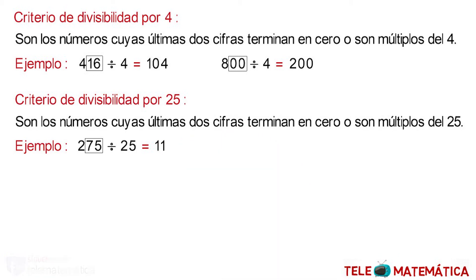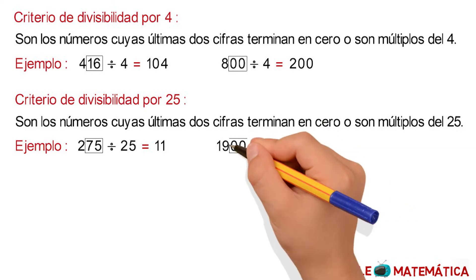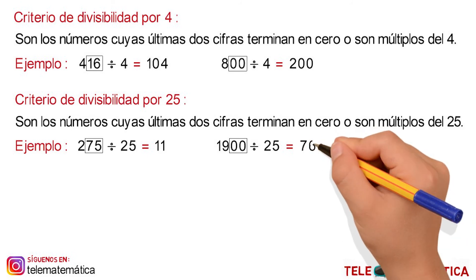Let's see another example: the number 1,900, whose last two numbers are 0. Then, to verify, we divide this number by 25 and we get as a result 76.